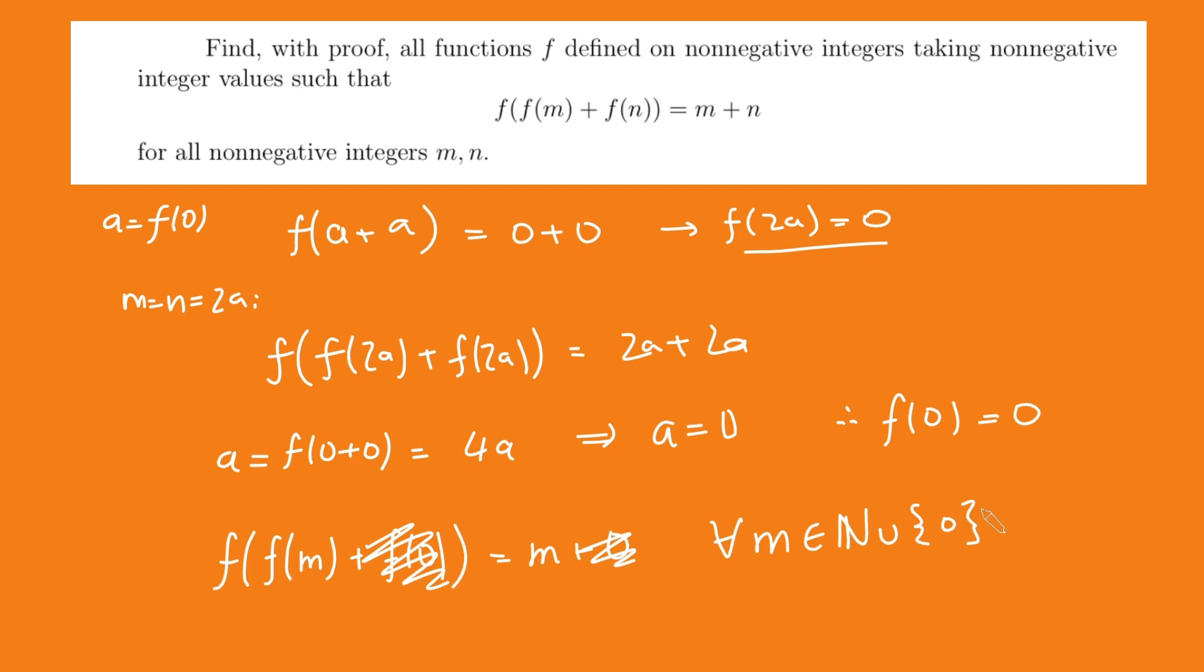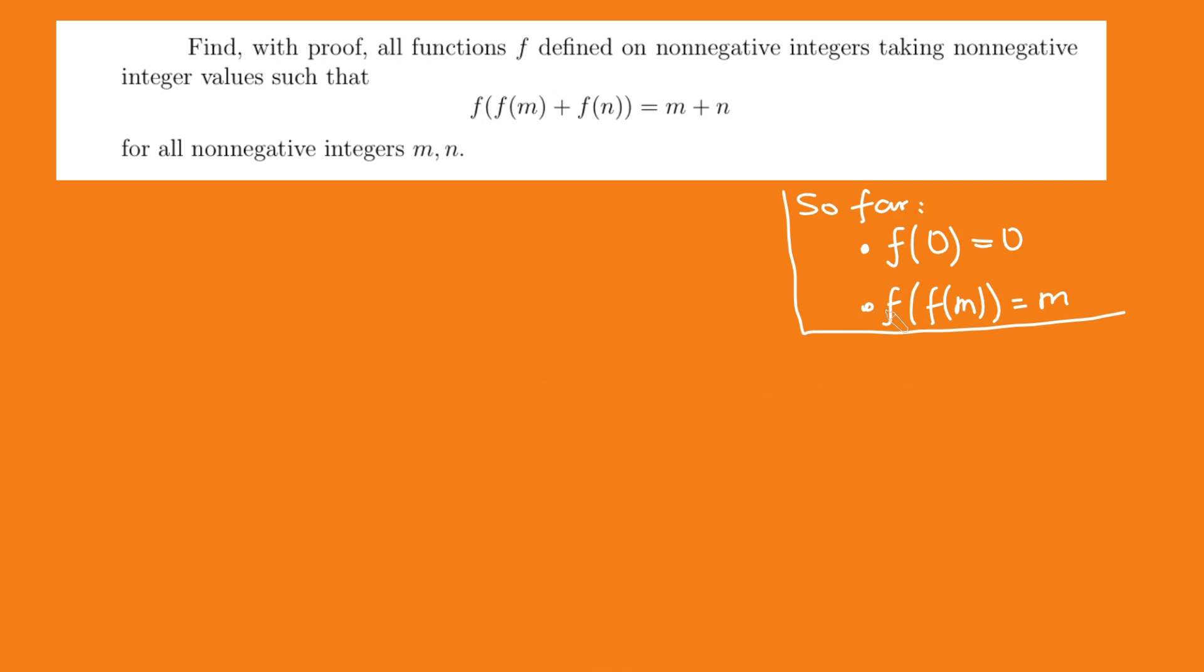Let's clean this up and continue. Cool. So we know that f applied to m twice gives us m again, which is quite nice, but doesn't precisely give us what f of m is just yet. But we can do a little bit more work here.